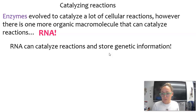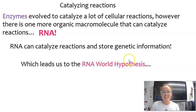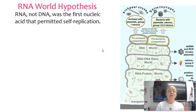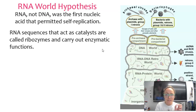This leads us to a hypothesis called the RNA world hypothesis. There are some scientists who have enough evidence to support the RNA world hypothesis that the first nucleic acid that was self-replicating was actually RNA and not DNA. In the RNA world hypothesis, RNA sequences act as catalysts and they're called ribozymes, and they can carry out enzymatic functions.